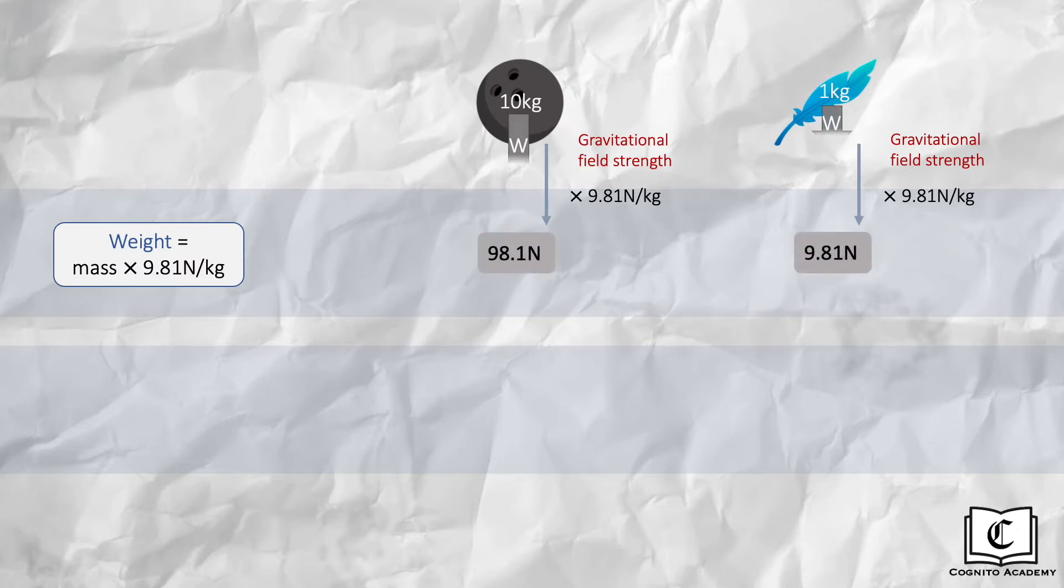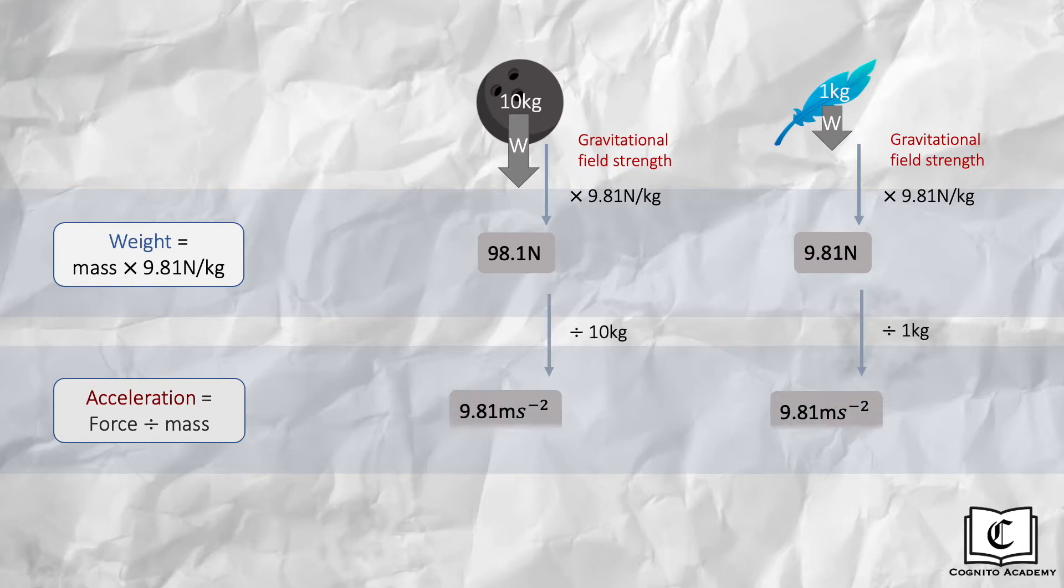Note that weight is the only force acting on these objects in vacuum. Next, since Newton's second law states that force equals mass times acceleration, acceleration is simply force divided by mass. Hence, we take the force, which is the weight of each object, and divide by its mass to give us its acceleration. And as we can see, acceleration due to gravity for both objects are similar, even though the bowling ball is heavier.